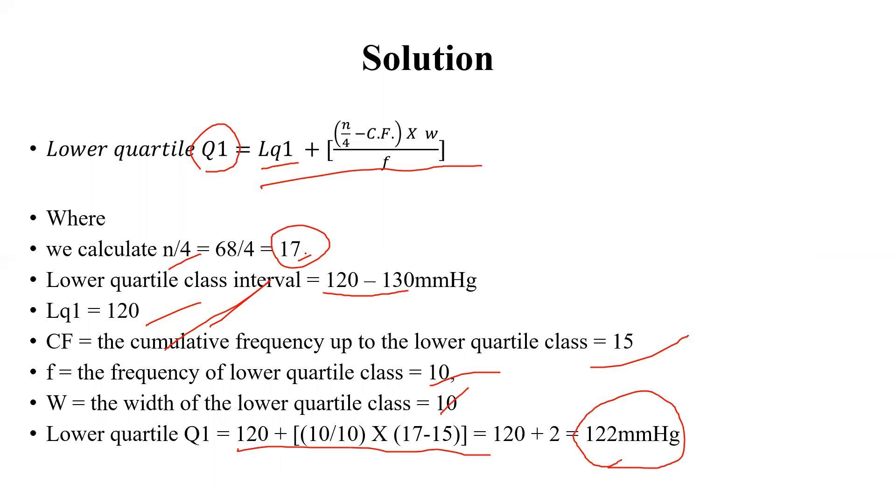Now N by 4 is 17 is the important point, and cumulative frequency as we know, we have to find out from the cumulative frequency column. So thank you everyone for this.